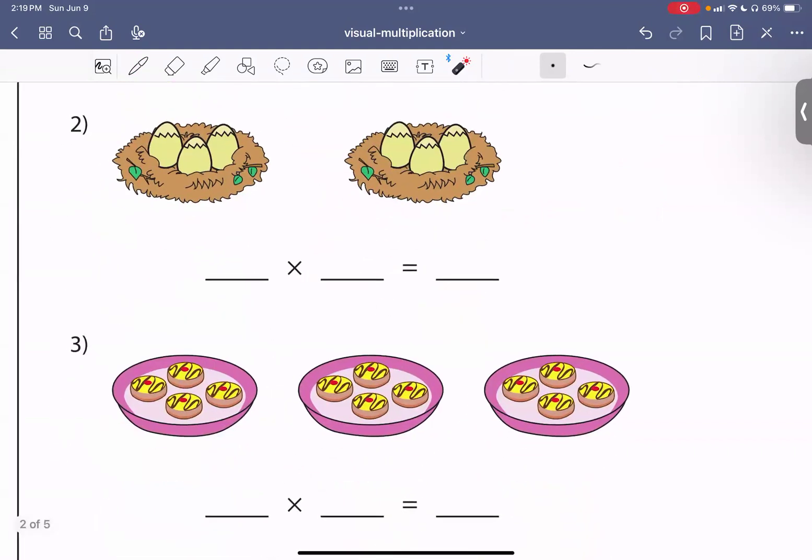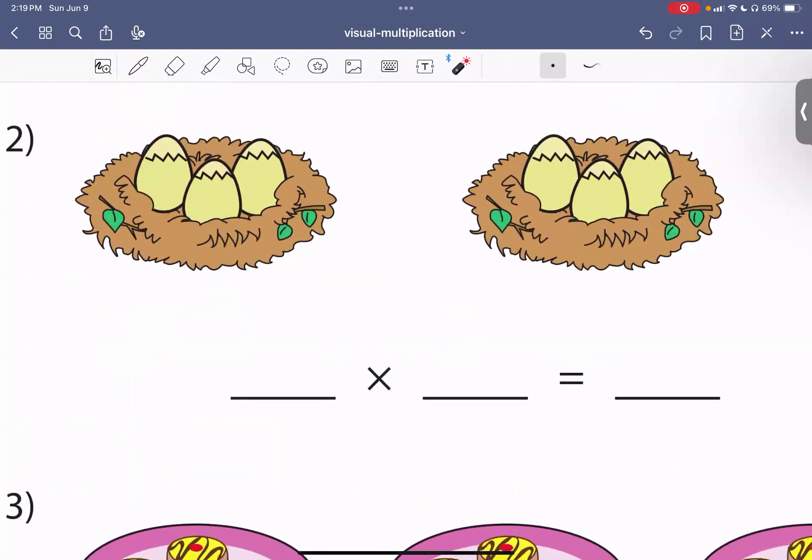Next, we have two nests. That's one nest, two nests. Now each nest has three eggs. One, two, three. So three times two is six. One, two, three, four, five, six. That's six eggs.